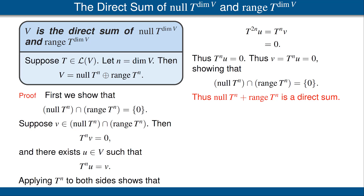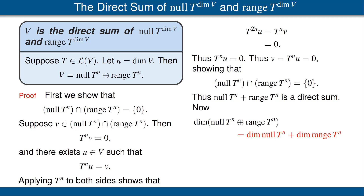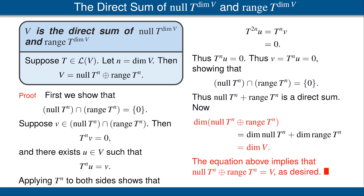Now we have to show that the direct sum is the whole vector space V. Let's look at the dimension of that direct sum. The dimension of the direct sum of two subspaces equals the sum of the dimensions of the two subspaces. We apply the fundamental theorem of linear algebra: the dimension of the null space of any operator plus the dimension of the range of that operator equals the dimension of the domain, in this case V. So the dimension of the direct sum equals the dimension of the whole space, which means the direct sum must equal the whole space. This completes the proof.